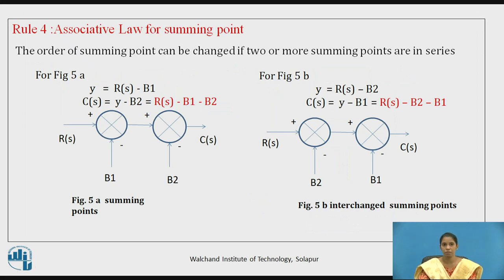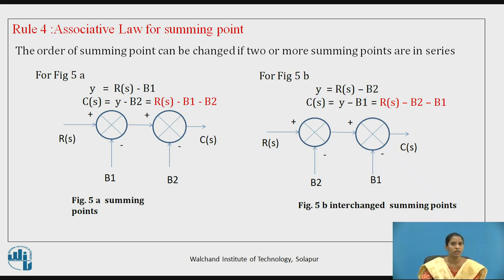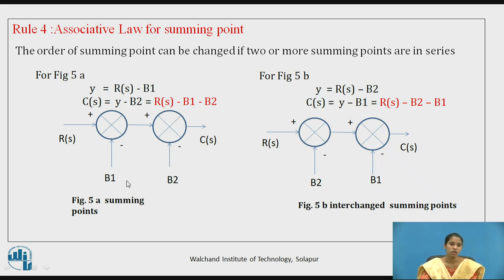Next, rule four: the associative law for summing points. This states that the order of summing points can be changed if two or more summing points are in series — connected one after the other without any block or takeoff point between them. In figure 5A the output is R(s) − B1 − B2. In figure 5B, B1 and B2 are interchanged, but the output remains the same: R(s) − B1 − B2.